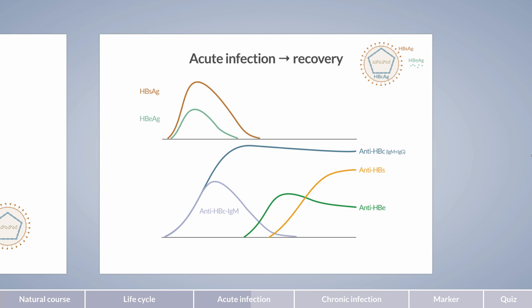This can also be seen in the slide. With the occurrence of anti-HBs antibodies, HBs antigen becomes undetectable, which indicates recovery from hepatitis B infection. In serology, the term seroconversion describes the disappearance of an antigen during the course of infection. The antigen is then replaced by the corresponding antibody, which is subsequently detectable in serum.